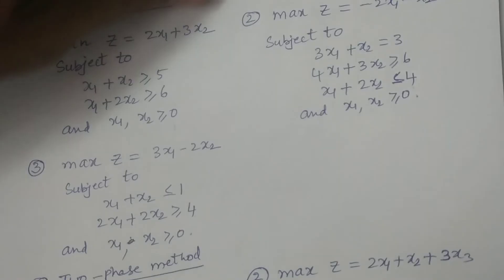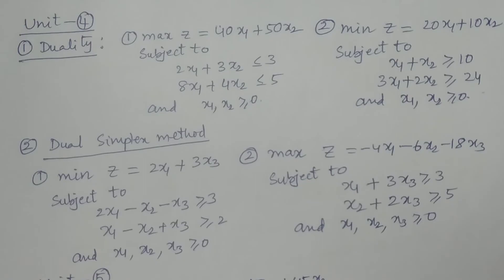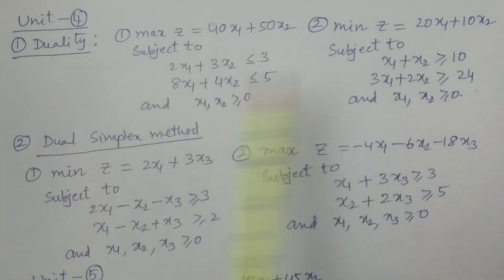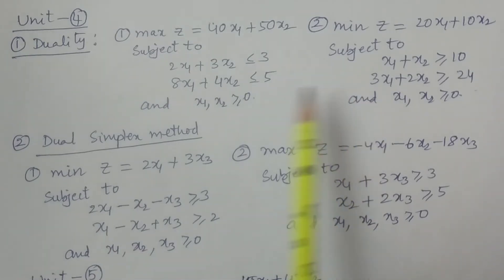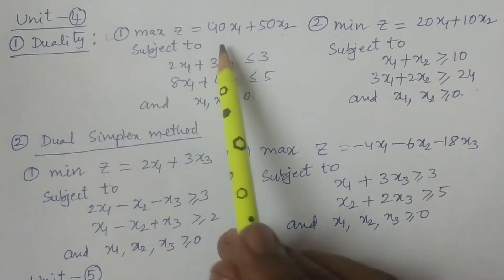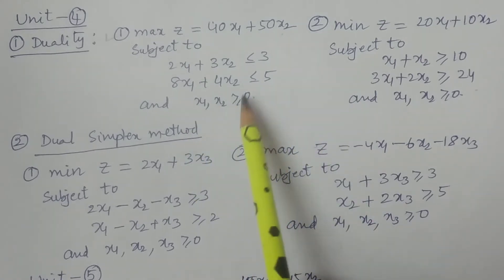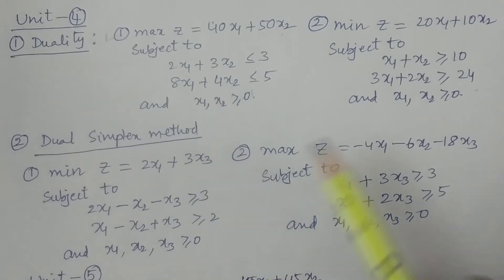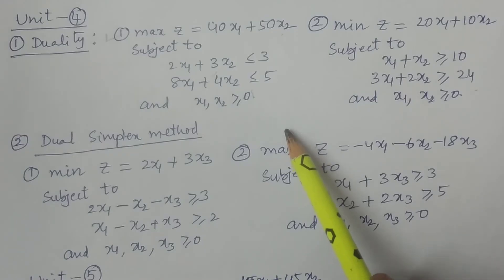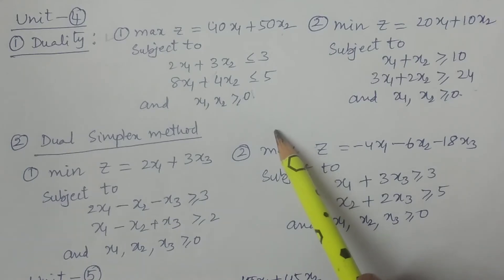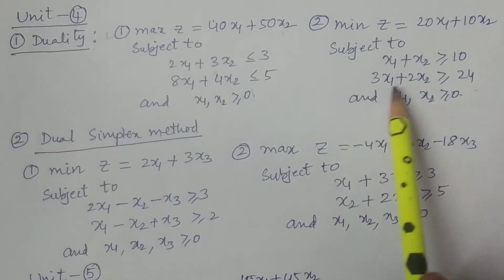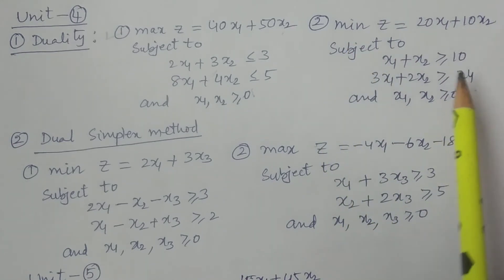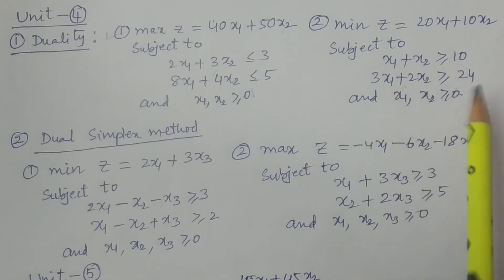Now Unit 4 — duality. Duality involves two particular methods. First, using duality to solve an LPP: for example, maximize z = 40x1 + 50x2 with ≤ constraints. You treat this as the primal, construct the dual problem, solve the dual using the simplex method, and then provide the solution to the primal. That is the method of duality.